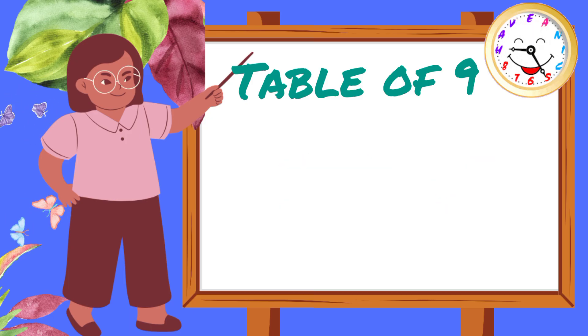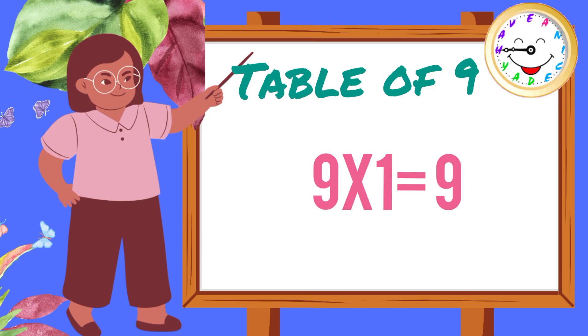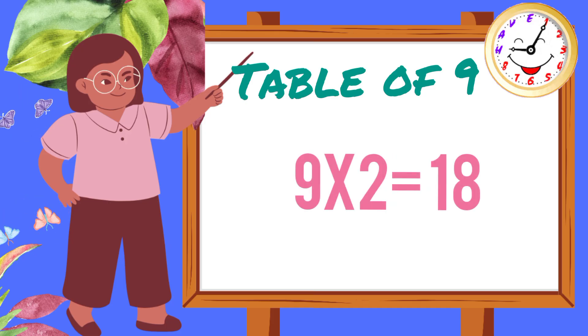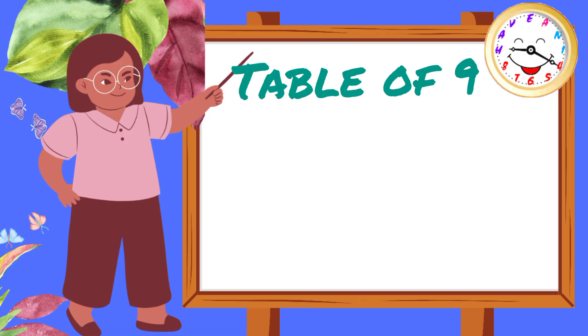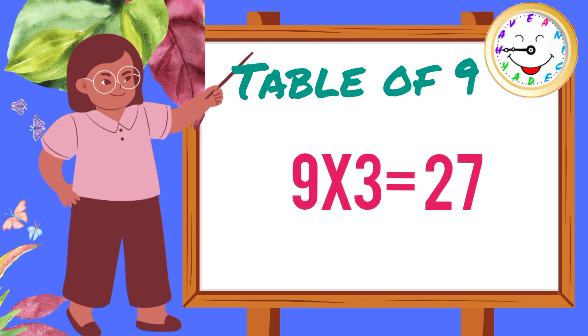Let's do it again. Nine ones are nine. Nine twos are eighteen. Nine threes are twenty-seven.